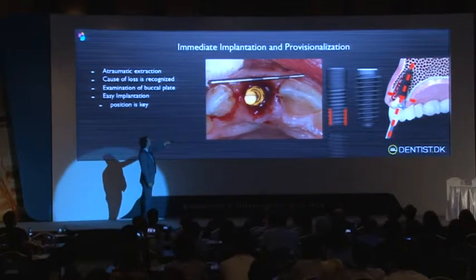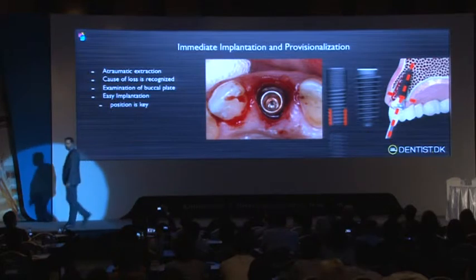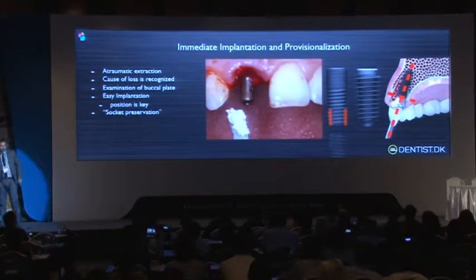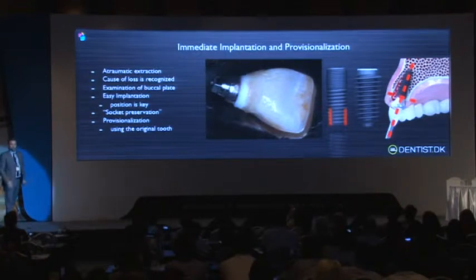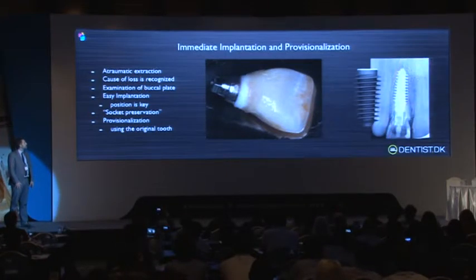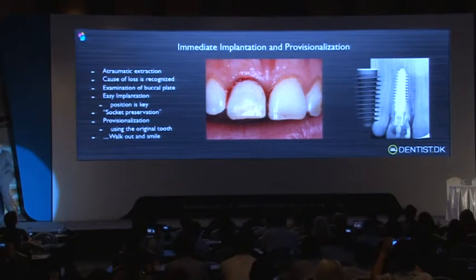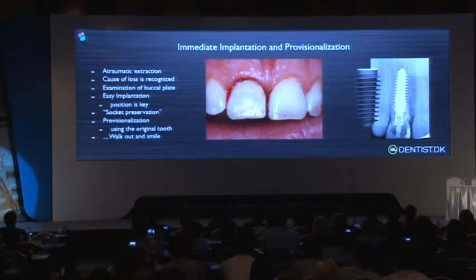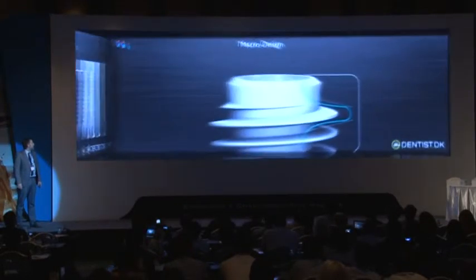As seen here, we keep the distance. We have the implant with space to the buccal. We do our socket preservation and we provisionize the tooth using the original tooth. And the patient can walk out and smile. In my practice, my assistants do the provisionals and they know one thing — I don't want any articulation on my provisionals, so they will always have a very short tooth. I'm quite sure they will come back for a new tooth.